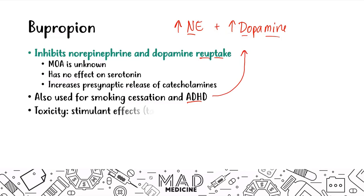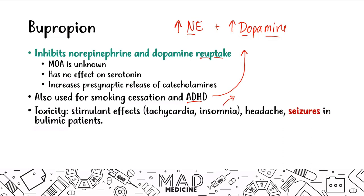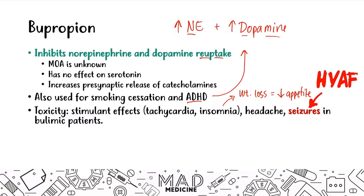When it comes to toxicity, it's similar to stimulants: tachycardia, insomnia, weight loss due to appetite suppression, and headache. The highest-yield point about bupropion is that when given to a bulimic or anorexic patient, it can induce seizures. Bupropion lowers the seizure threshold, and patients with anorexia or bulimia already have a decreased seizure threshold, putting them at higher risk. Watch out for this on board questions.